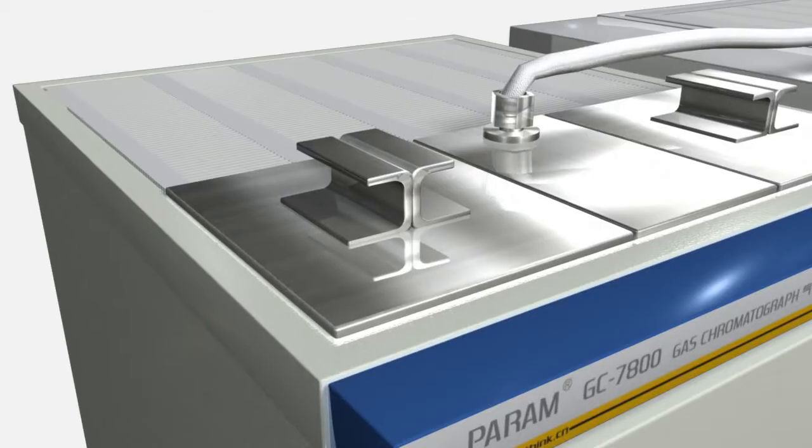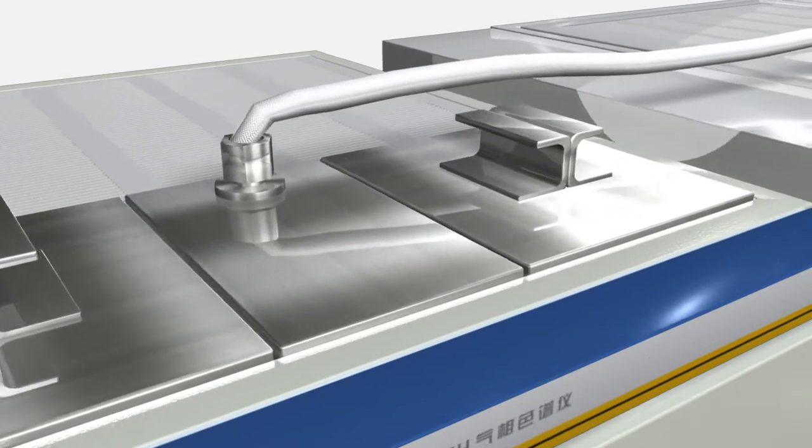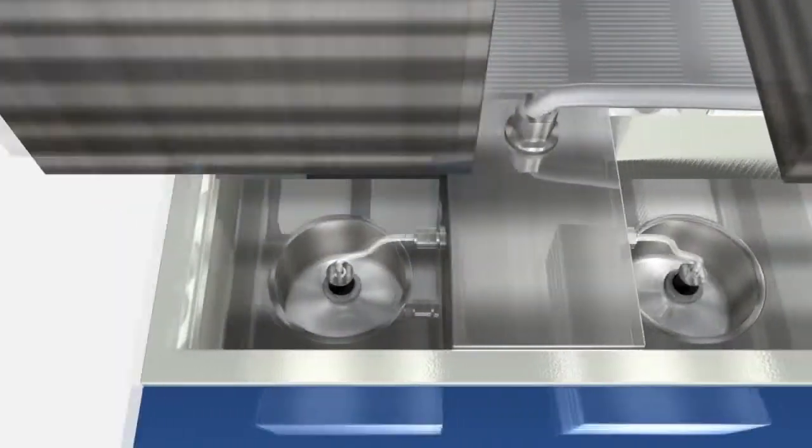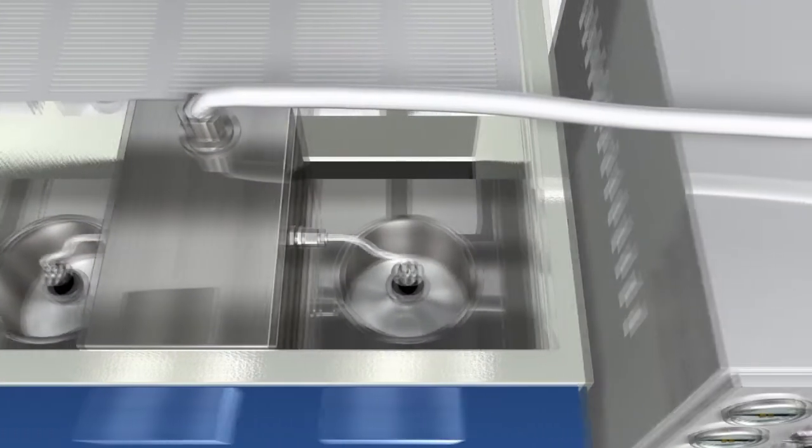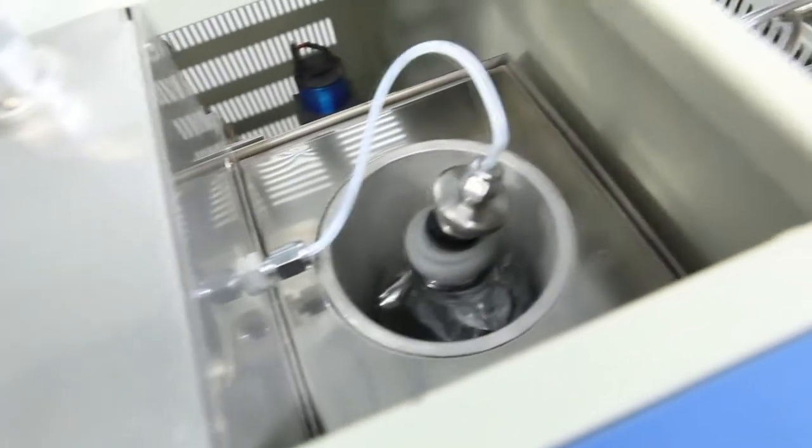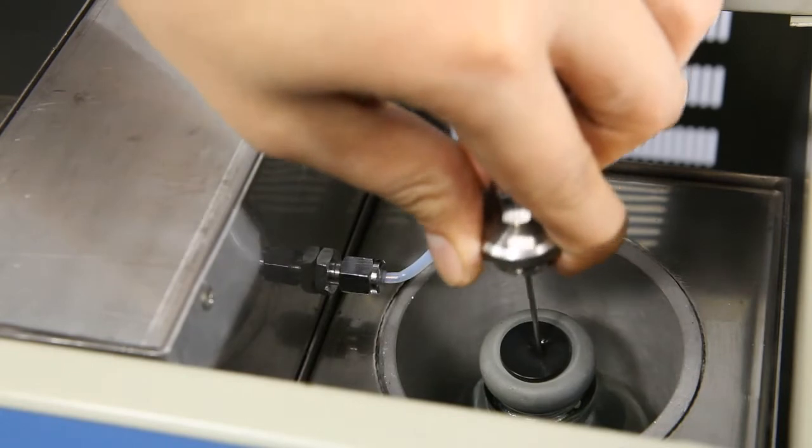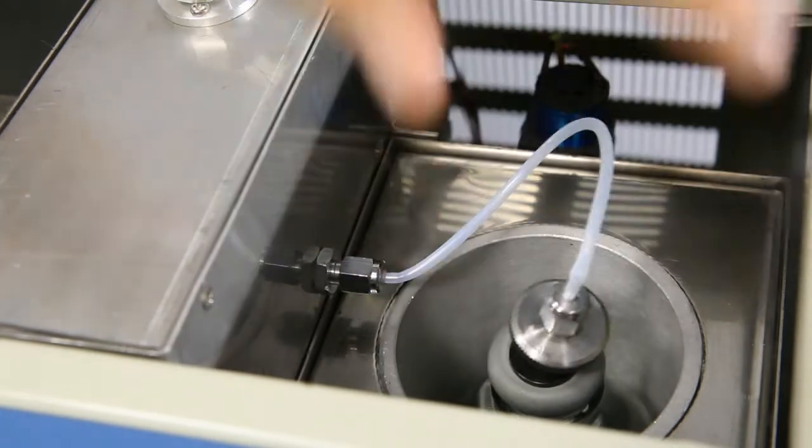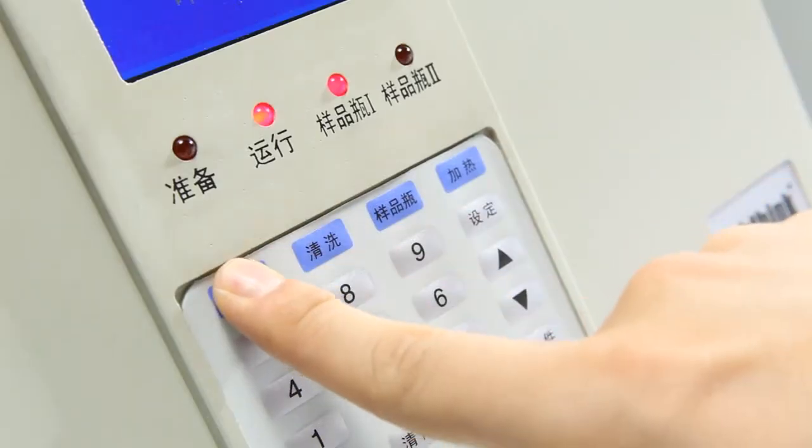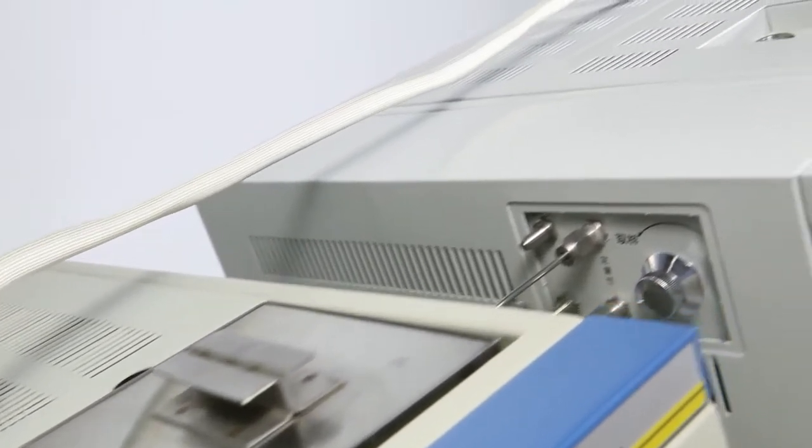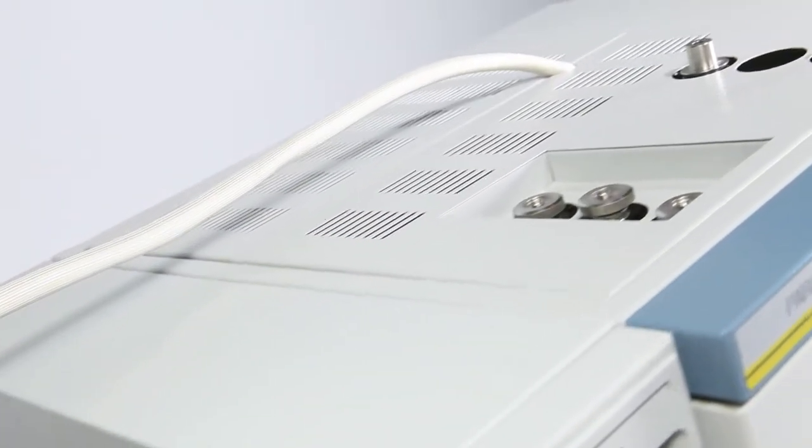The auto sampler has two large volume thermostatic chambers. This device can perform automatic sample injection and testing of two different samples in a predetermined order. Users only need to insert the sampling needle into the headspace bottle, press start, and the system will accomplish the sample injection and analysis automatically.